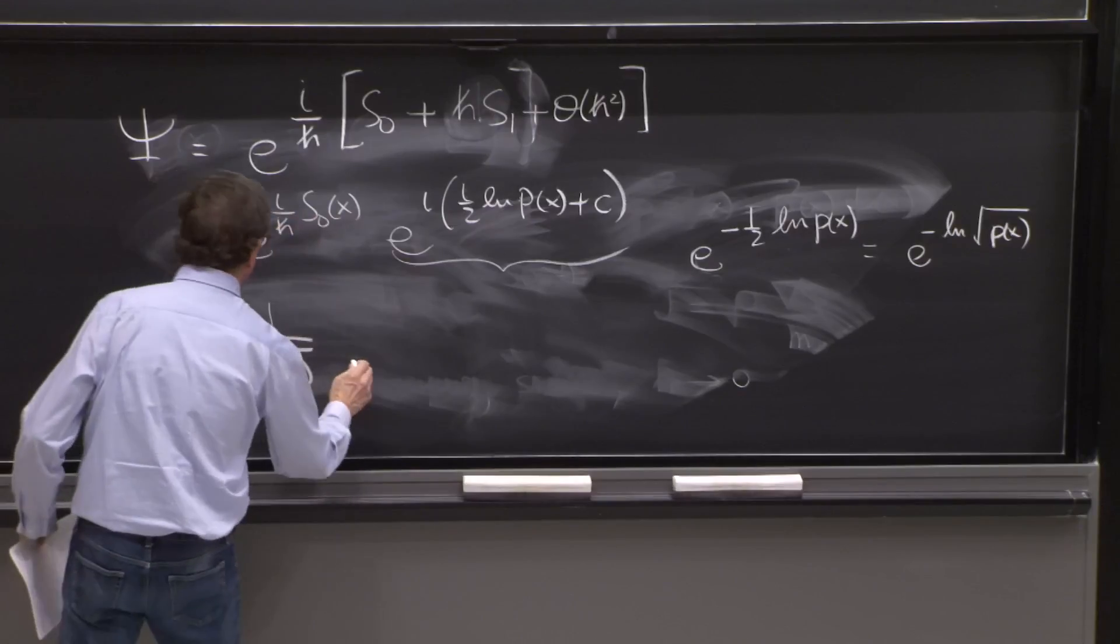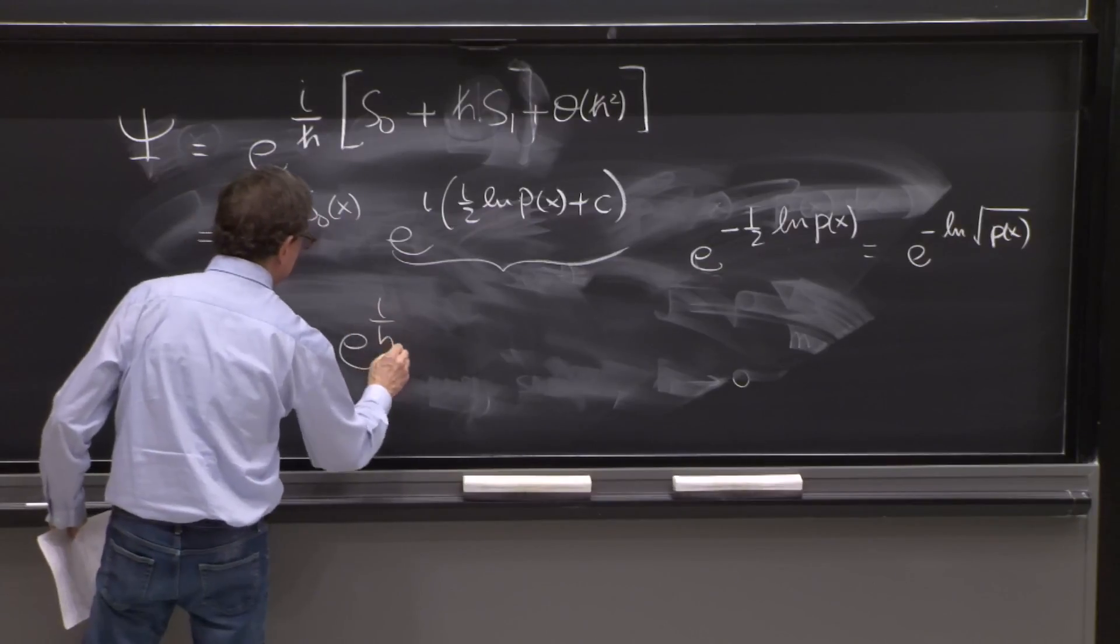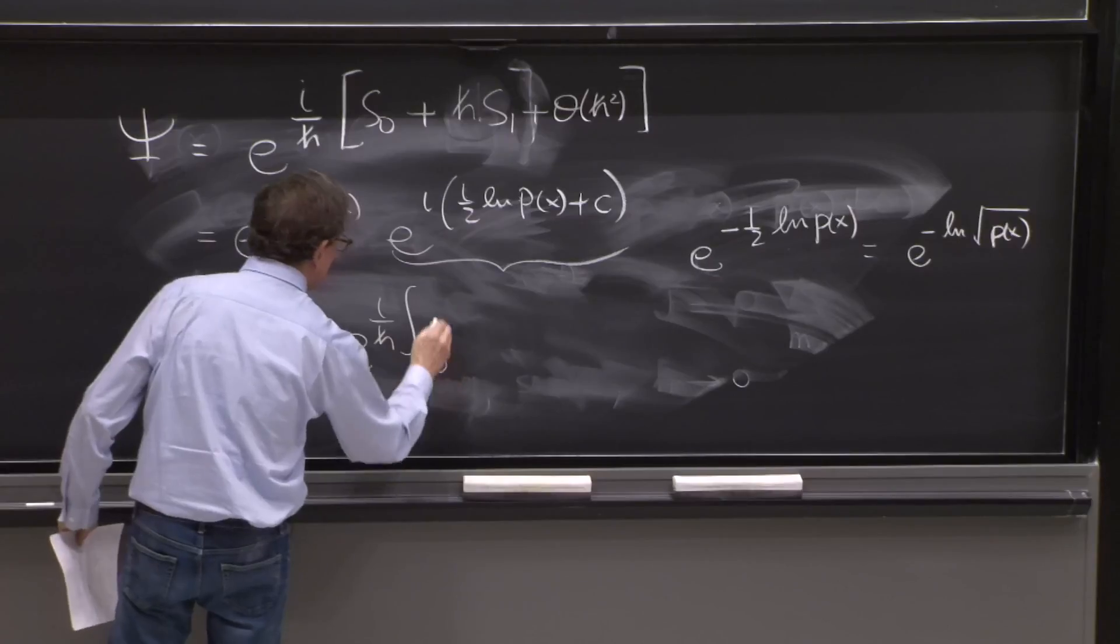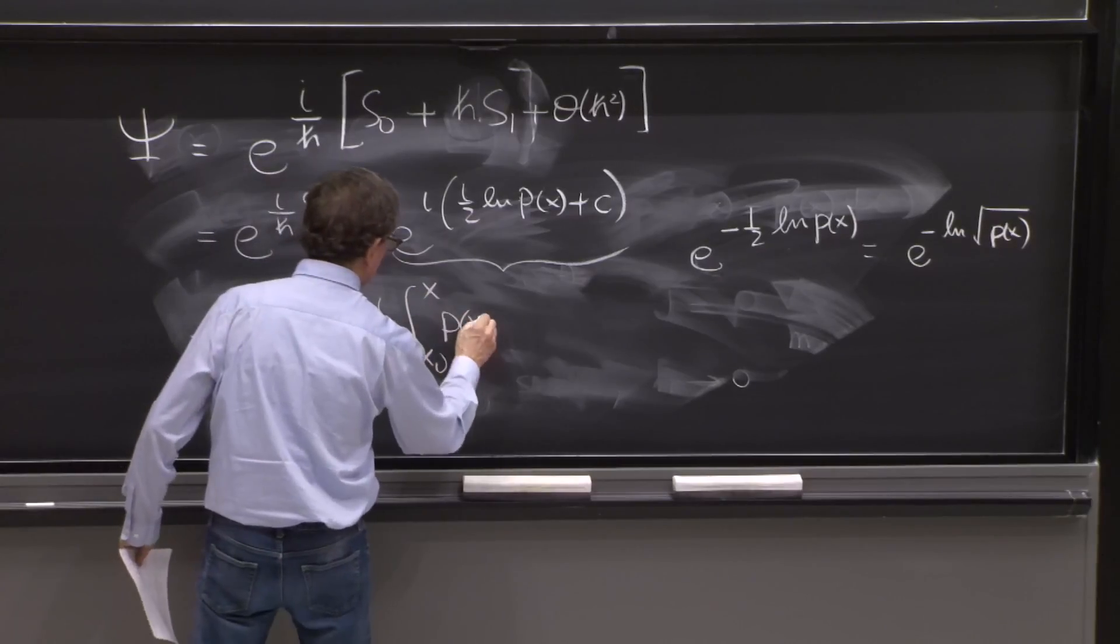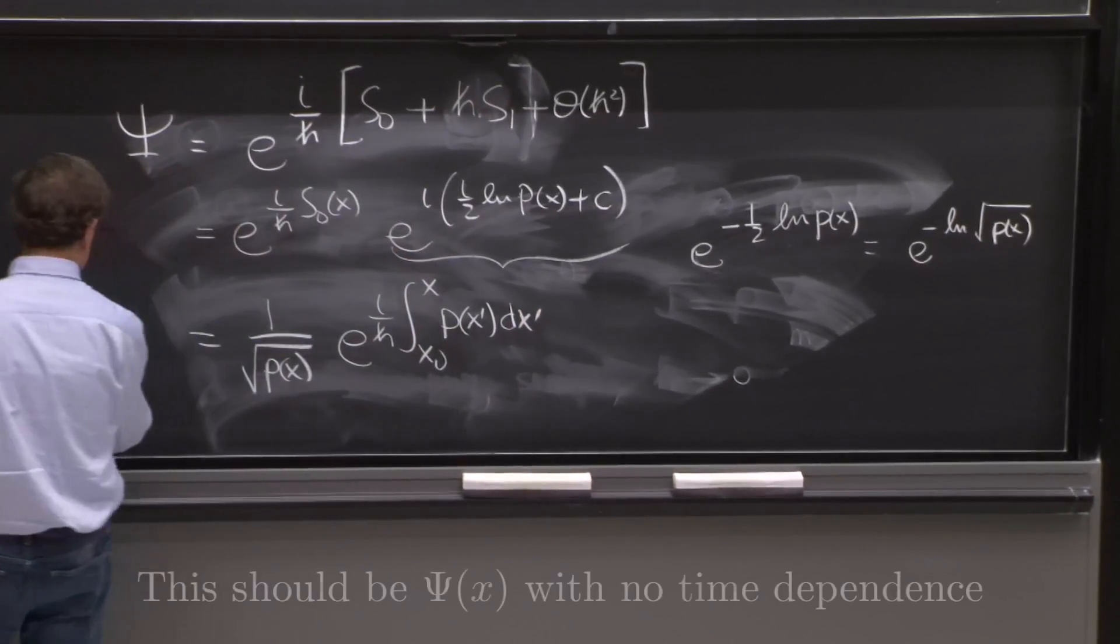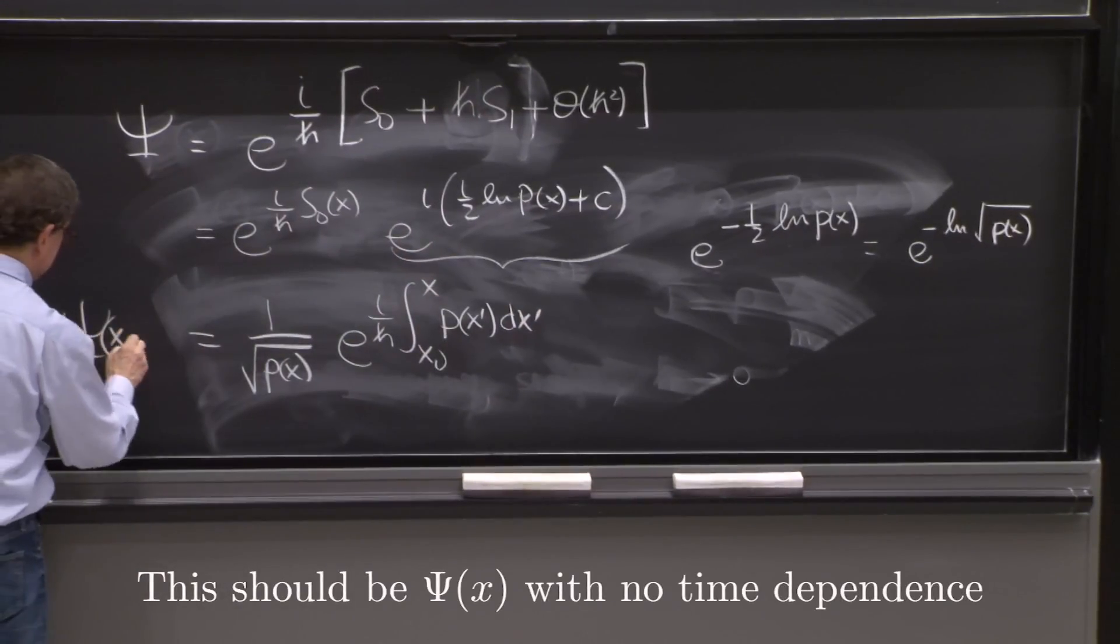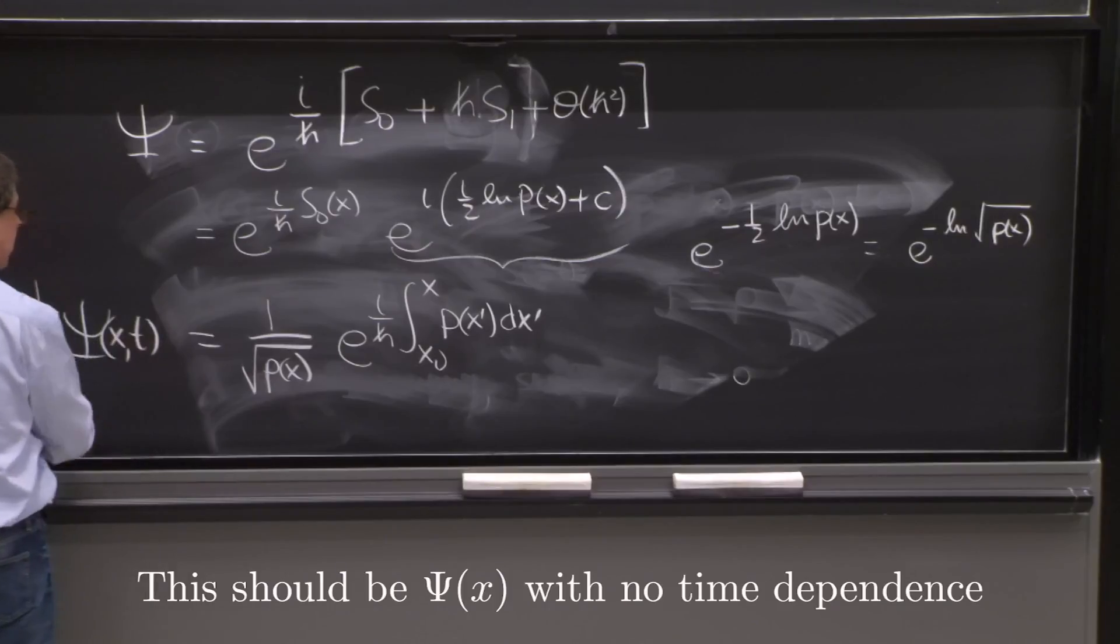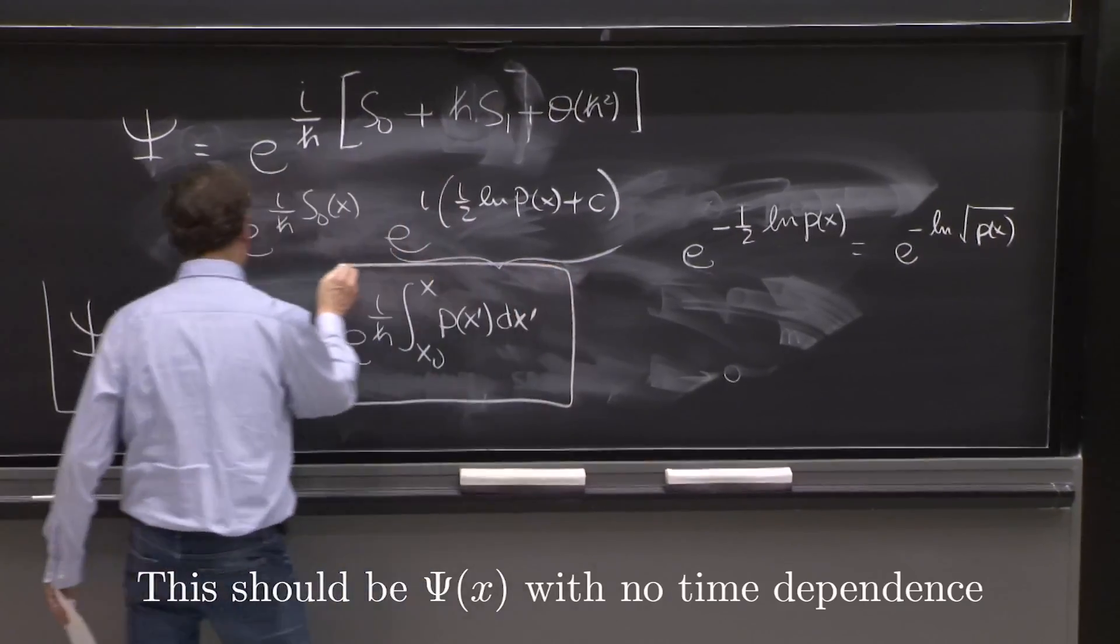And then we have e to the i over h bar integral from x0 to x, p of x prime dx prime. This is the classic WKB approximation, classic result.